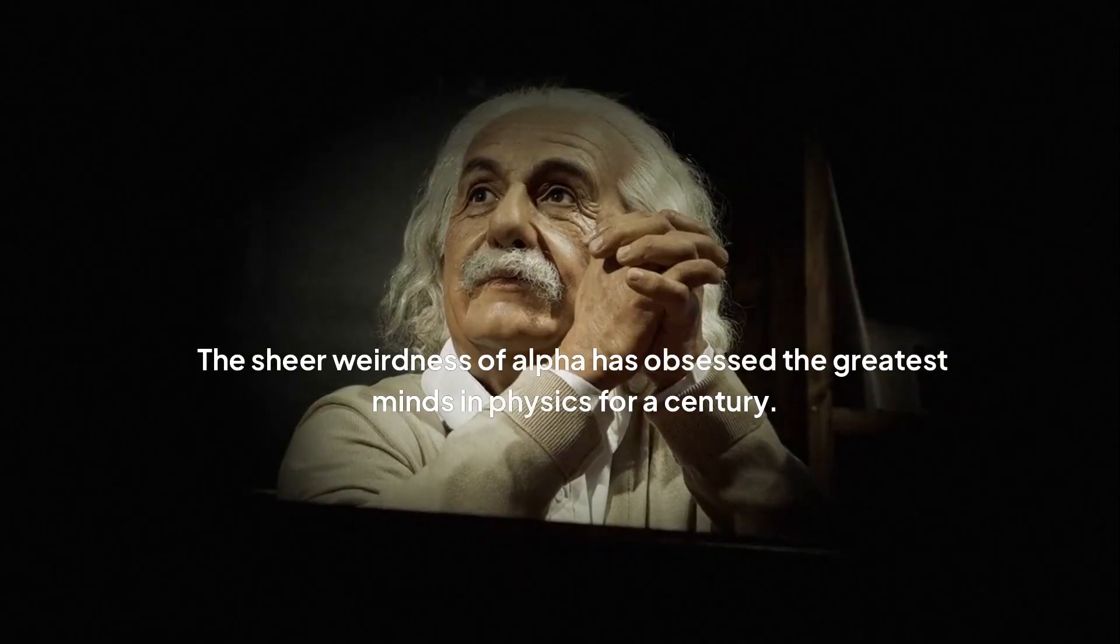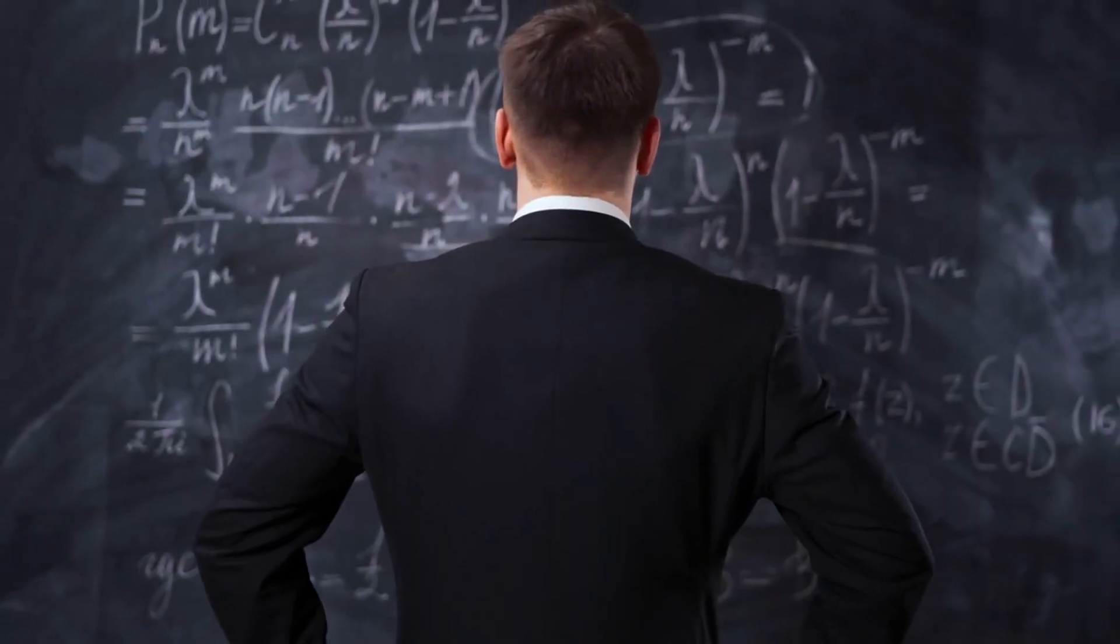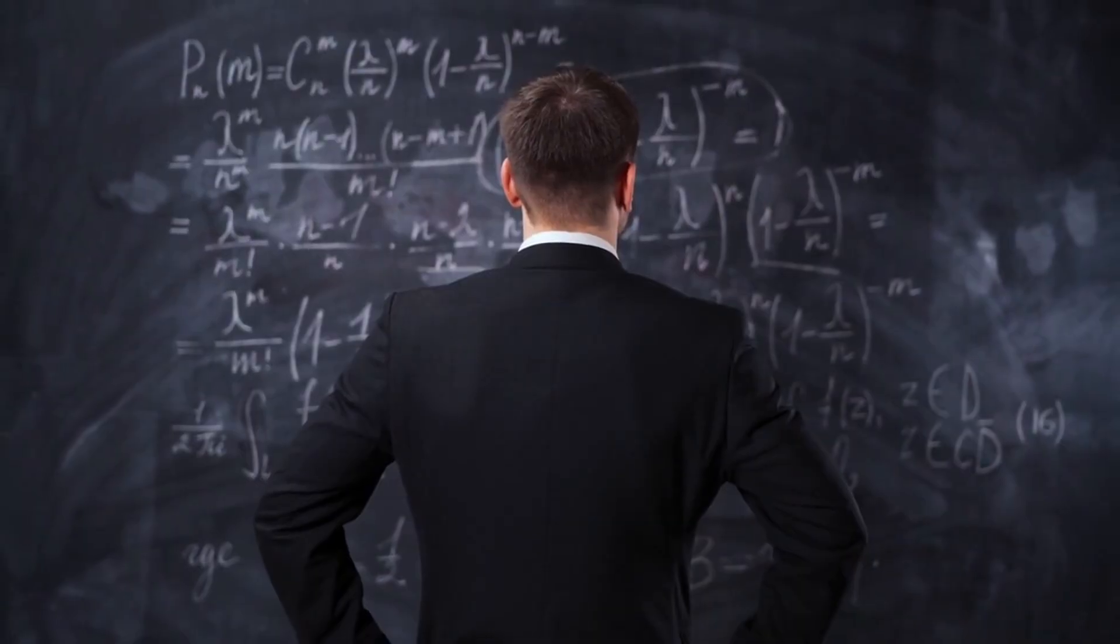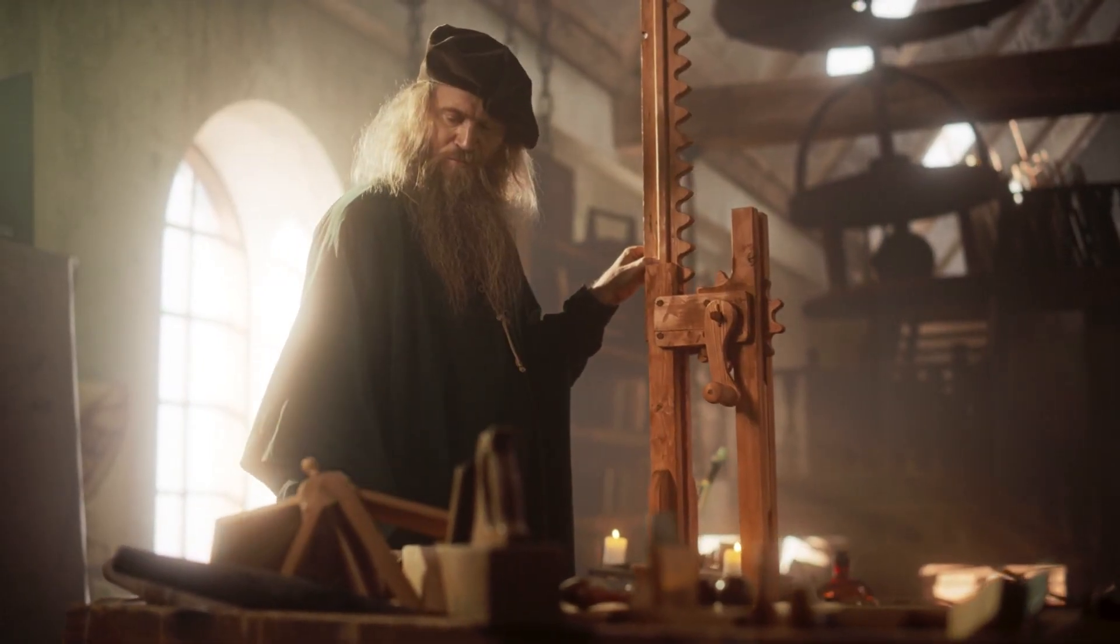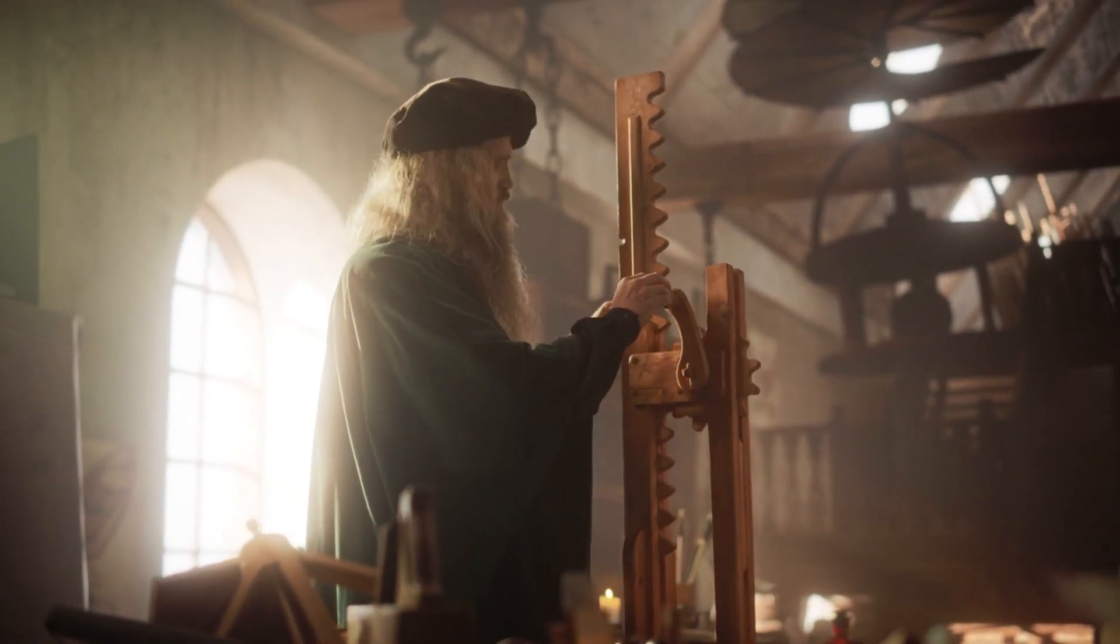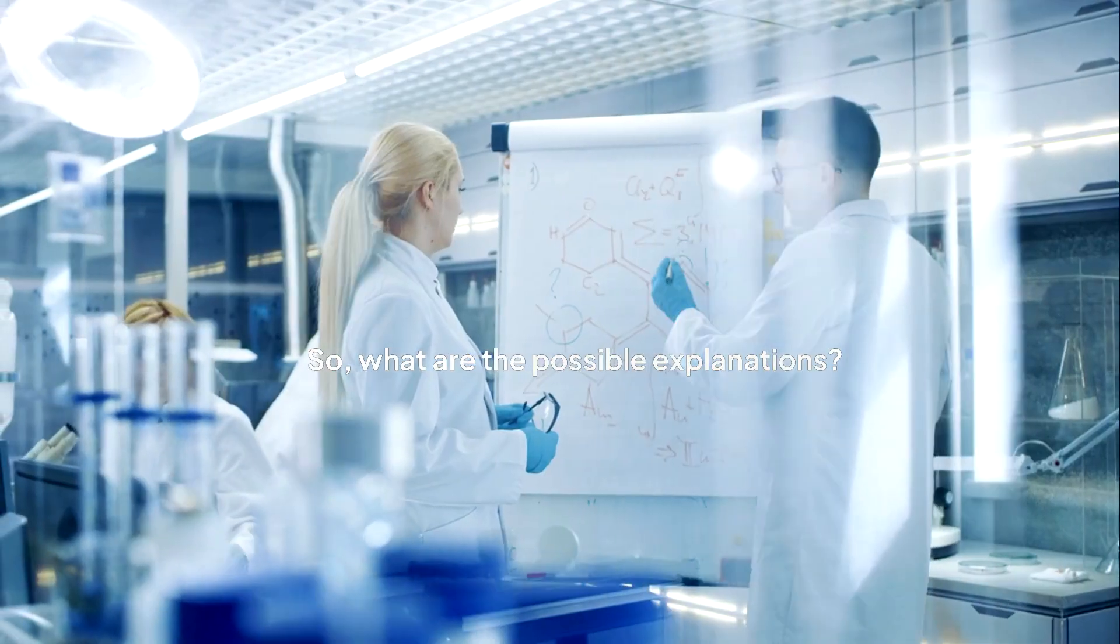The sheer weirdness of alpha has obsessed the greatest minds in physics for a century. The legendary Richard Feynman called it one of the greatest damn mysteries of physics, and said that all good theoretical physicists put this number up on their wall and worry about it. He was convinced there had to be a logical reason for its value, but it slipped through his fingers his entire life. Another giant of physics, Wolfgang Pauli, was so haunted by it that he joked his first act upon meeting the devil would be to ask him how the fine structure constant comes to be.